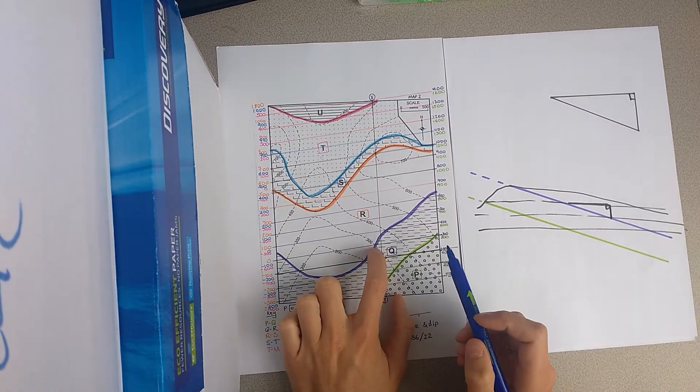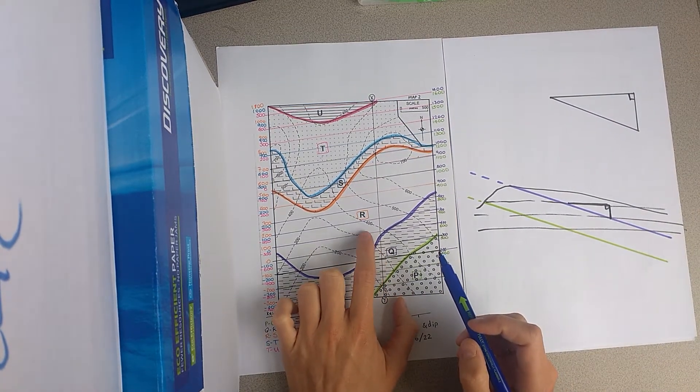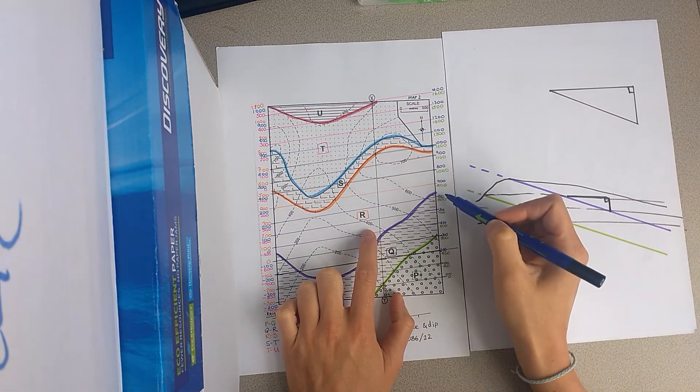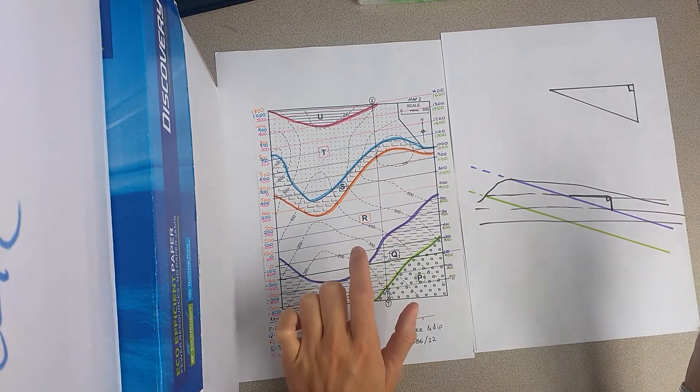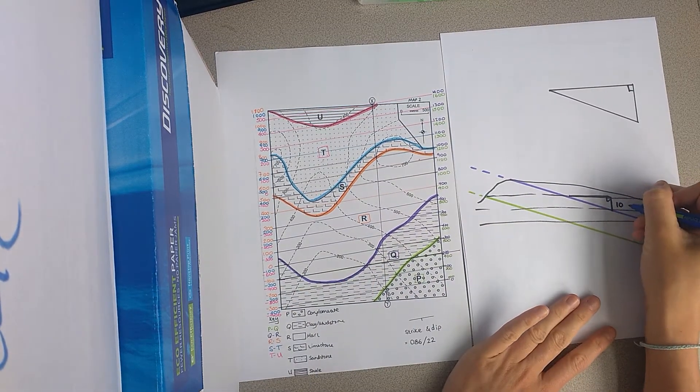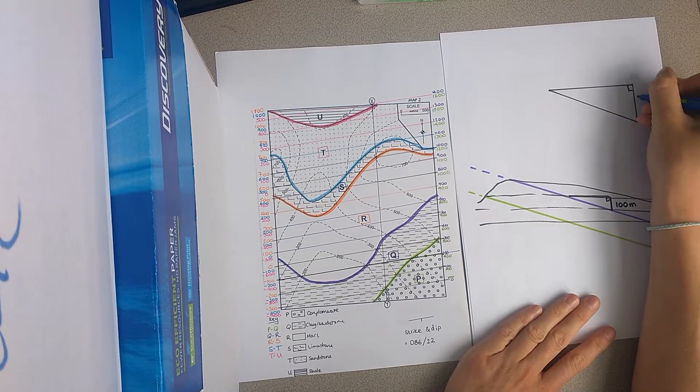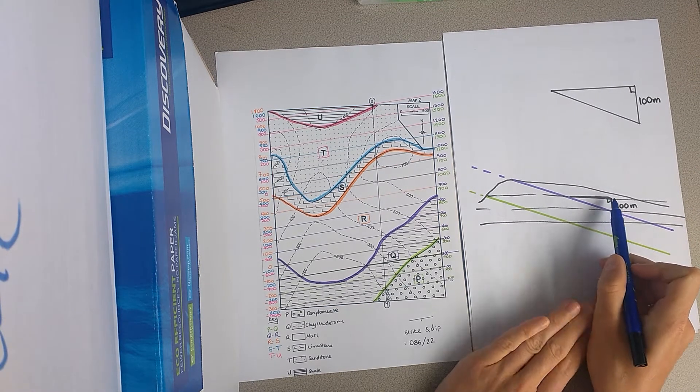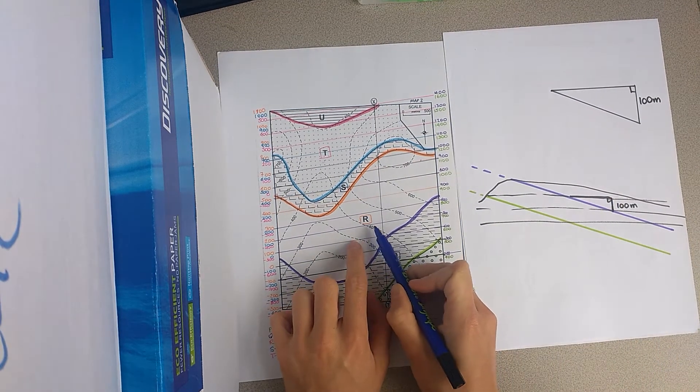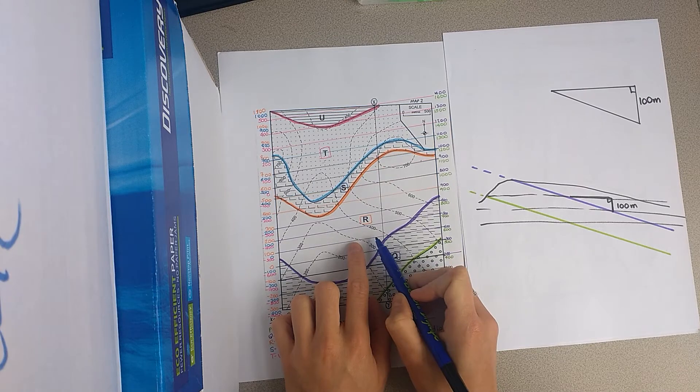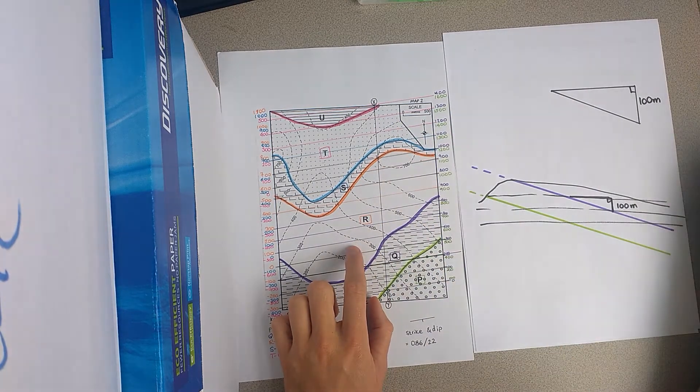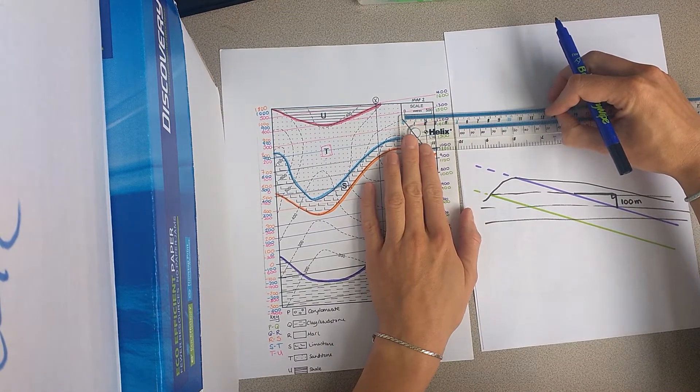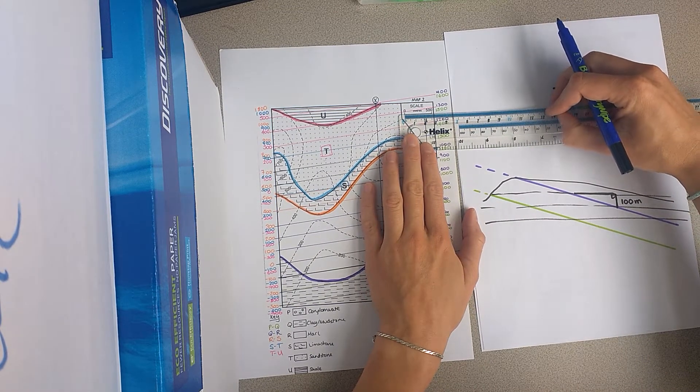Okay, so when we look at these two structure contours, we can see, as we've done the labelling, 300, 400, 500, 600 metres, that they are 100 metres apart. So this means that the vertical distance we're looking at is 100 metres. Now, the horizontal distance is the distance between the structure contours, but this is a factor of the scale of the map. So you can see the scale of the map is 2.5 centimetres is 500 metres.